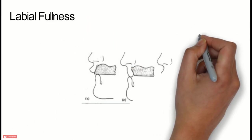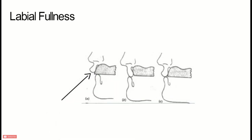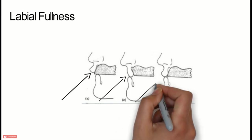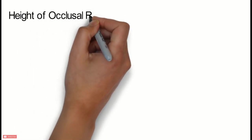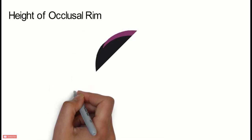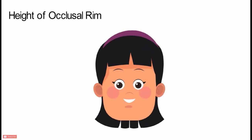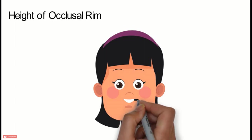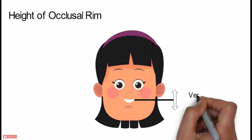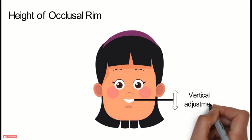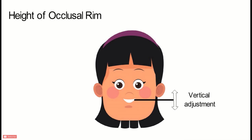Therefore, the labial surface should be cut back or added to until a natural and pleasing position of the upper lip is obtained. The occlusal rim should be adjusted vertically until it represents the amount of anterior teeth intended to show below the lips at rest. The average adult shows about 3 mm of upper central incisors when the lips are at rest, but there are many variations. For example, a greater length of tooth than normal may be shown by the patient who has a short upper lip. In most older people, owing to attrition of natural teeth and some loss of tone of the orbicularis oris muscle, the tooth visibility may be less.